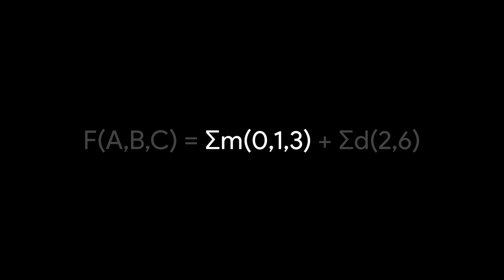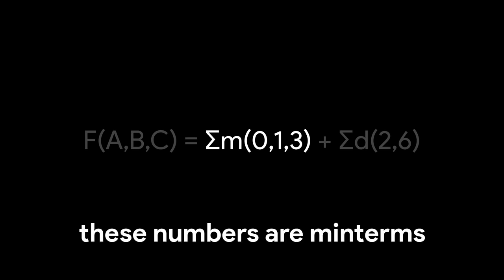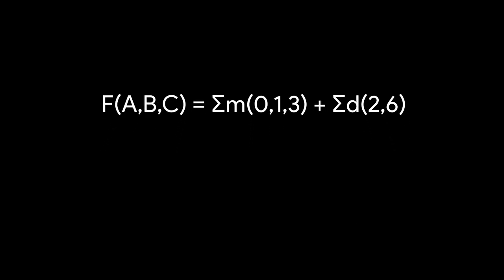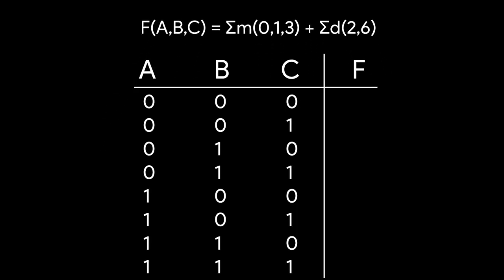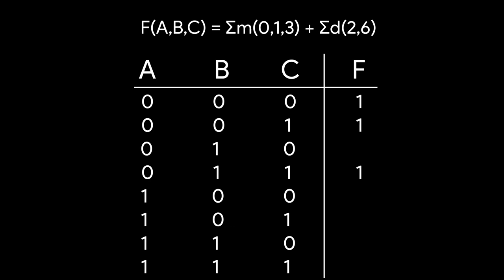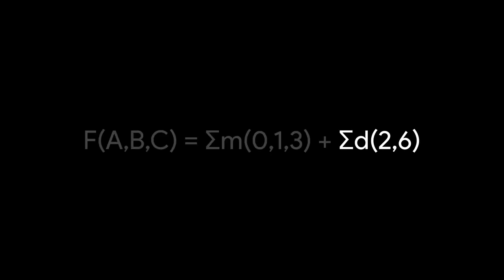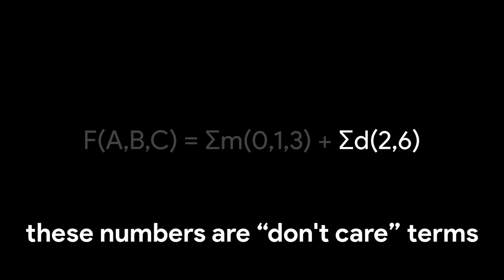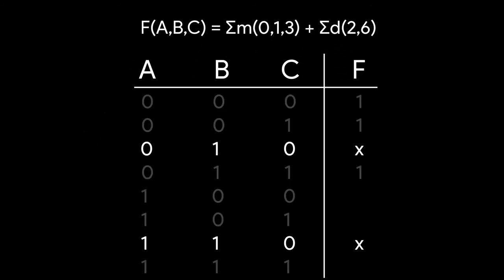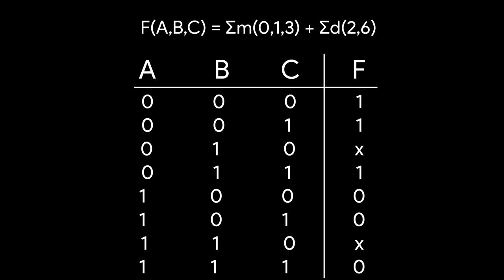Each of the numbers in the min-term parentheses represents min-terms, or rows of the truth table, that have an output of 1. Each of the numbers in the don't care parentheses represent don't cares, or rows of the truth table that have unspecified outputs. All other truth table rows are 0.